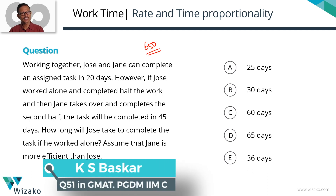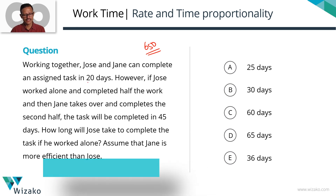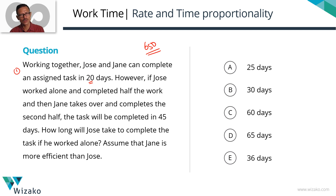The first statement is a typical work-time kind of statement. Working together, Joe and Jane can complete an assigned task in 20 days. They work together in parallel and finish the task in 20 days. We know how to frame this equation — we'll assign variables. This is the easier part because it's a very typical standard one.